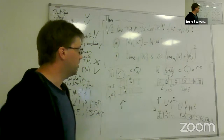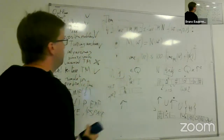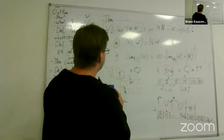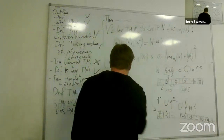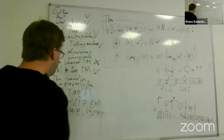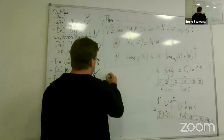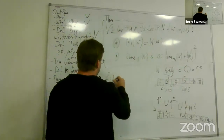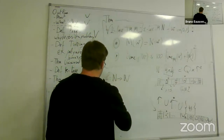Now the very last thing: I'm sorry for running 15 minutes late. Next time I'll keep better track of time. We now define time complexity: if f is a function from natural numbers to natural numbers, then...